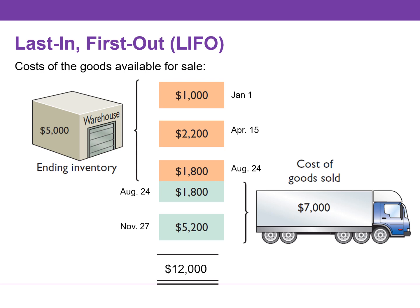We can also calculate cost of goods sold under LIFO by pricing the 550 units sold using the prices of the last 550 units acquired. Of the 300 units purchased on August 24th, only 150 units are assumed sold; the other 150 units were assumed unsold and included in the ending inventory.